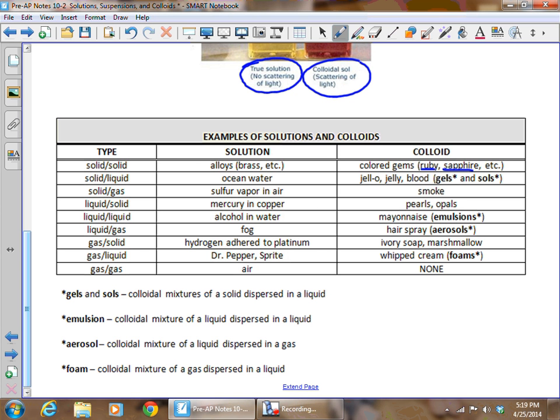A solid dissolved in a liquid is ocean water. A solid dispersed in a liquid is jello, jelly, blood. The gels and sols. You can see the terms for colloidal mixtures of a solid dispersed in a liquid. Solid dissolved in a gas is sulfur vapor in air. Smoke would be an example of the colloid of a solid dispersed in a gas.